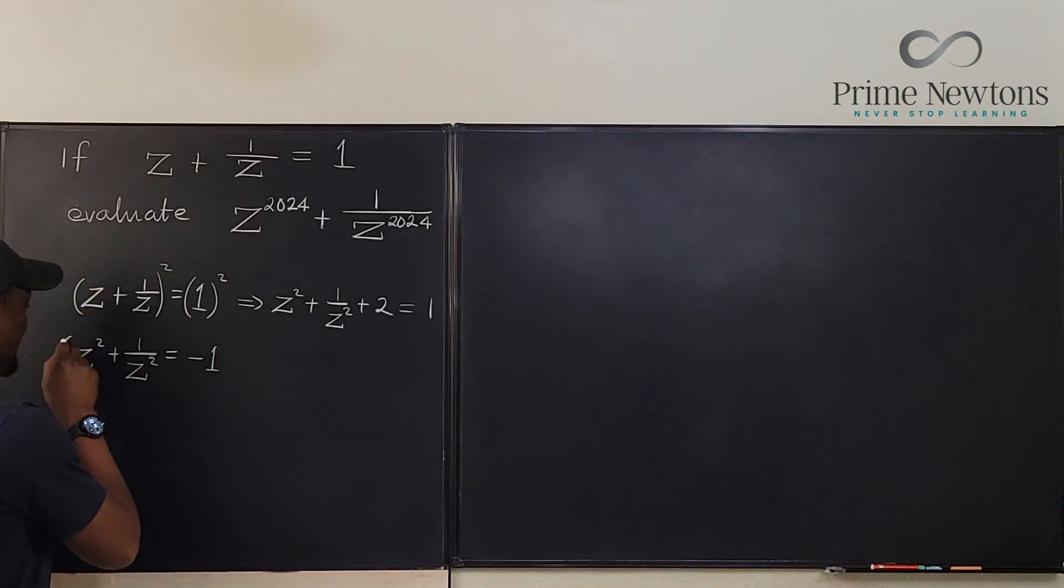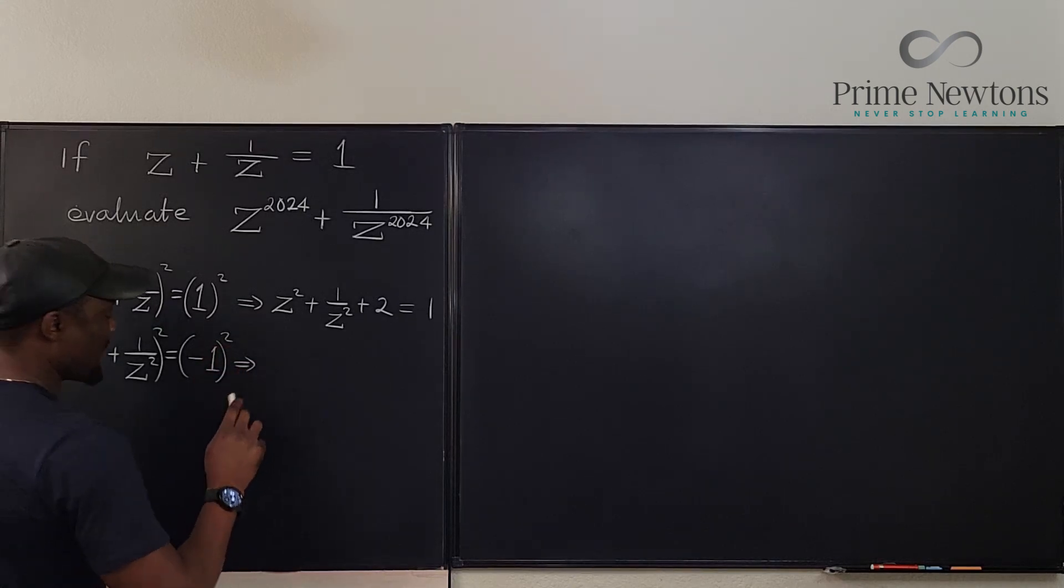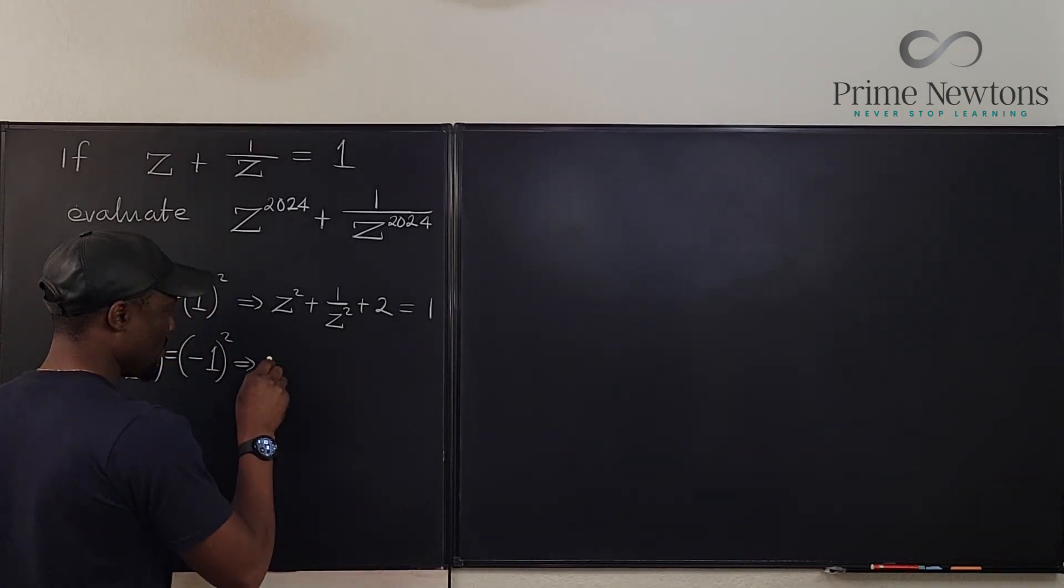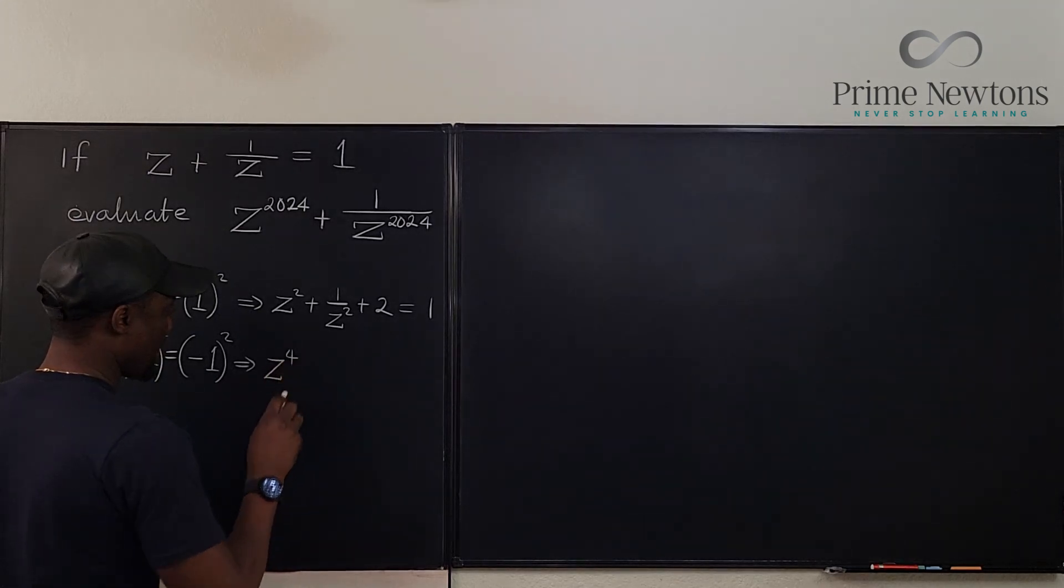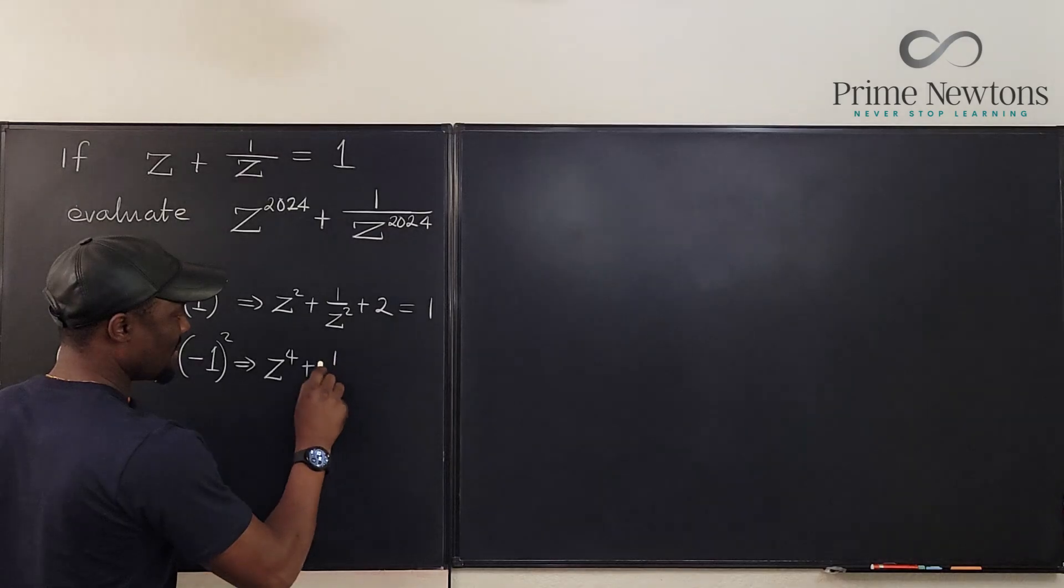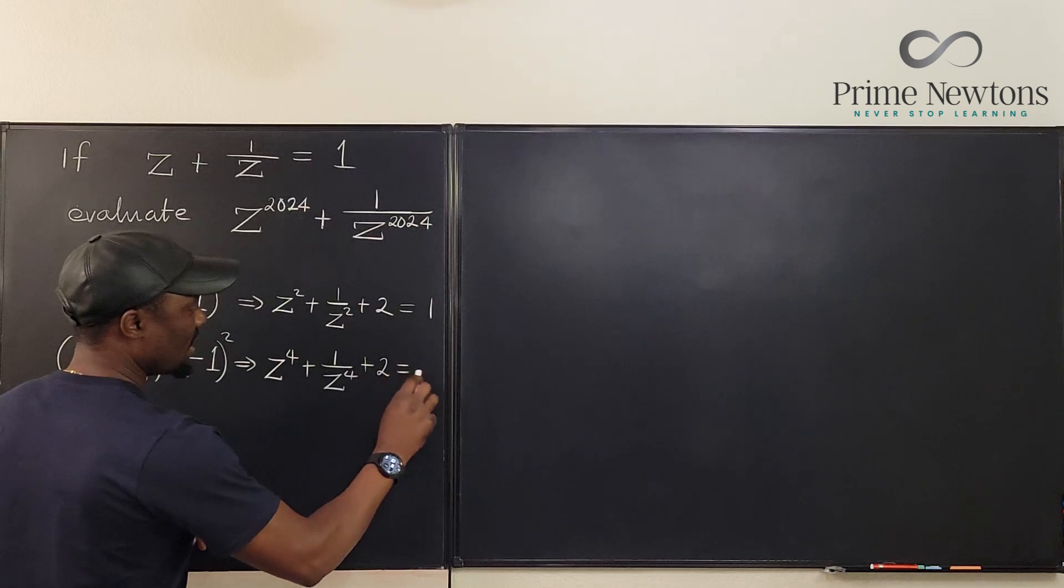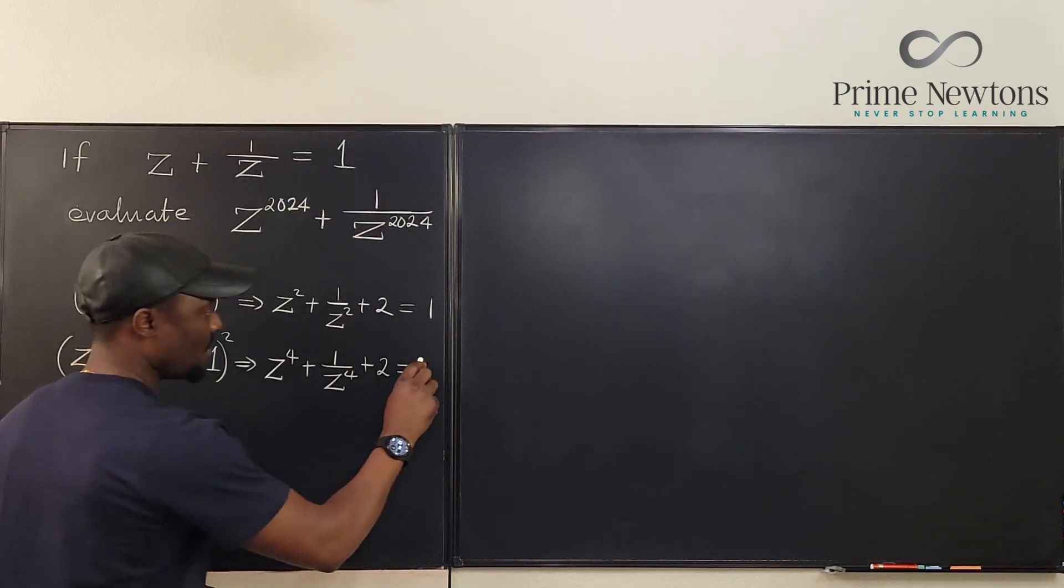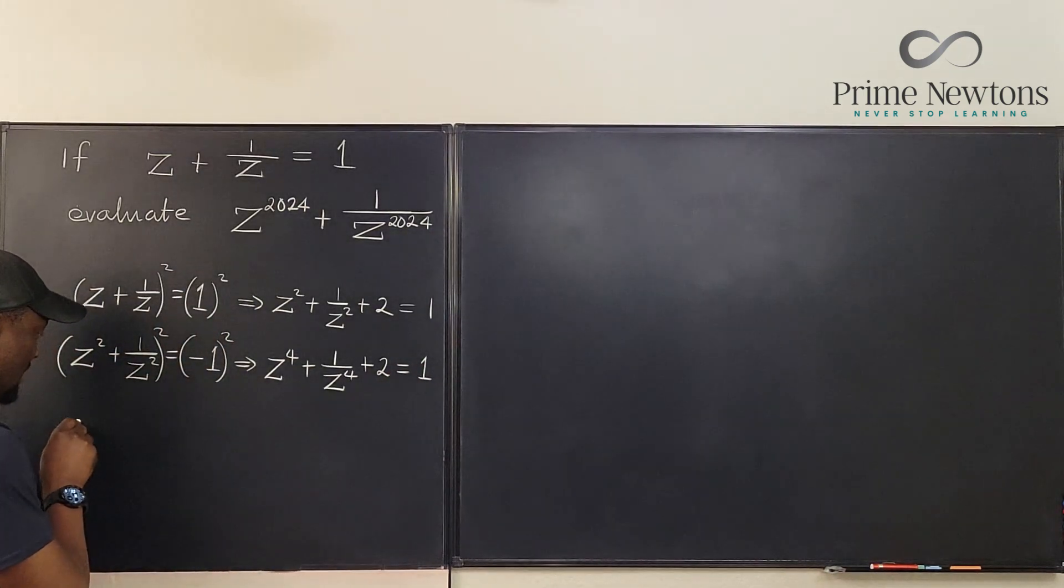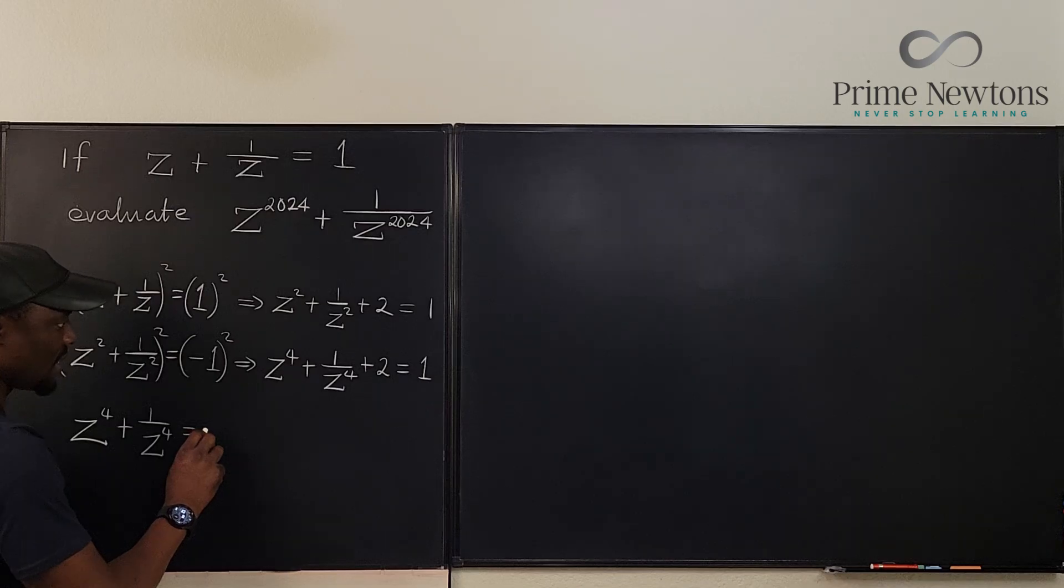So we're going to square. What do we get? If we square this, we're going to get z to the fourth. And then we're going to multiply again. We'll end up with the same pattern. It's going to be 1 over z to the fourth plus 2 equals, the square of this is going to be 1. So we end up with z to the fourth plus 1 over z to the fourth equals, subtract 2 from both sides, it's going to be minus 1.